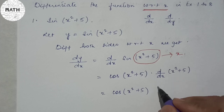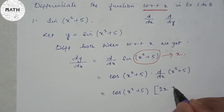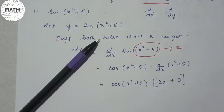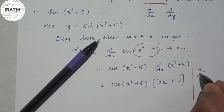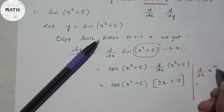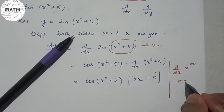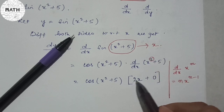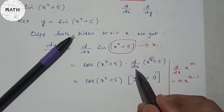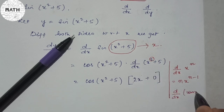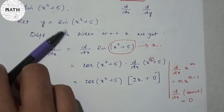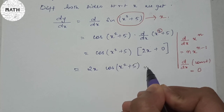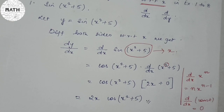Differentiating x² gives 2x (using the power rule: bring down the power, so 2·x^(2-1) = 2x), and d/dx of the constant 5 is 0. So the final answer for Question 1 is 2x·cos(x² + 5).